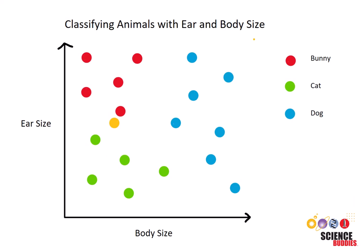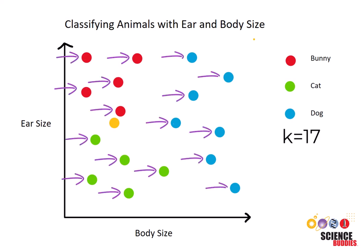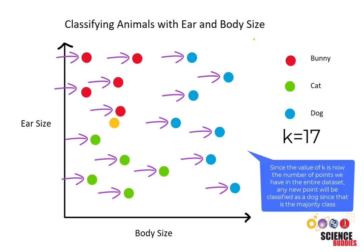Meanwhile, if our K-value was closer to 17, we would just classify it as a dog, since there are more dogs in the dataset. When the K-value is too large and the data is skewed — meaning that one class is more prevalent than the others, which in our case is dogs — it's likely the majority of the nearest neighbors will belong to the majority class.